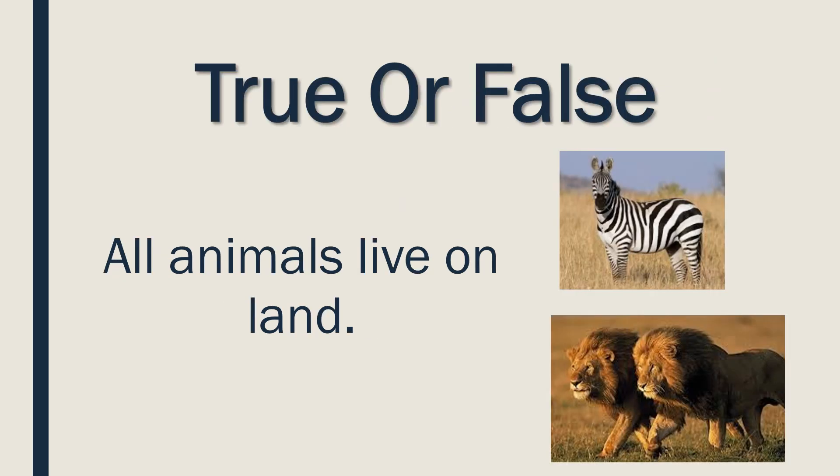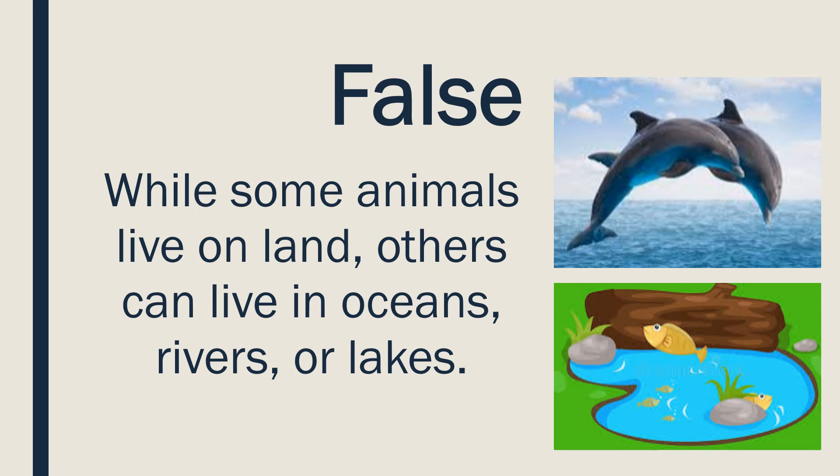True or false: all animals live on land? This is false. While some animals live on land, others live in oceans like dolphins, or in rivers and lakes like fish. I hope you enjoyed this and learned something today.